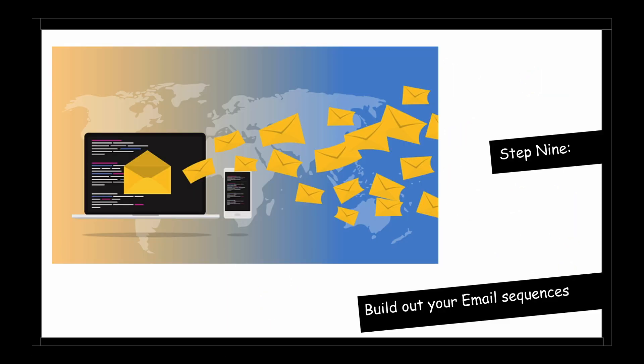Step nine is to build out your email sequences. The money is in the list and the fortune is in the follow up. The most important thing to know is that we're not just affiliate marketers or internet marketers. At our core, we are essentially email marketers. It takes on average seven to 10 contacts with your customer before a sale is made. People buy from people that they know, like and trust.